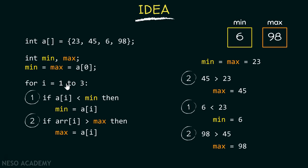At the end of this for loop, we have obtained our minimum and maximum elements — 6 and 98 respectively. This is the basic idea of finding the minimum and maximum element of an array. But here, as we can observe, I have not used any pointers at all. In the actual program, I am going to use pointers. Let's dive into the code now.